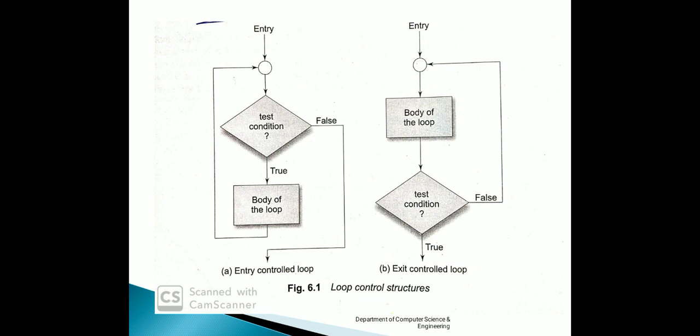For the first time, it will not check any condition. It will execute normally — the body of the loop will be executed normally. And after that, the condition will be checked. Again, if the condition becomes false, then only the second time the body of the loop will be executed. Otherwise, the control will come out of the loop. That is one more difference between entry control loop and exit control loop: where in entry control loop, if the condition becomes false, the control will come out of the loop.